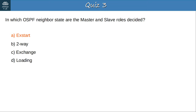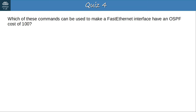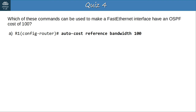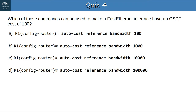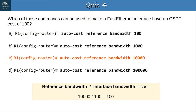Question 4: Which command makes a fast Ethernet interface have an OSPF cost of 100? The answer is C, AUTO COST REFERENCE BANDWIDTH 10,000. The cost is calculated by dividing the reference bandwidth by the interface bandwidth. A fast Ethernet interface has a bandwidth of 100 Mbps. 10,000 divided by 100 equals 100, so you should set the reference bandwidth to 10,000.